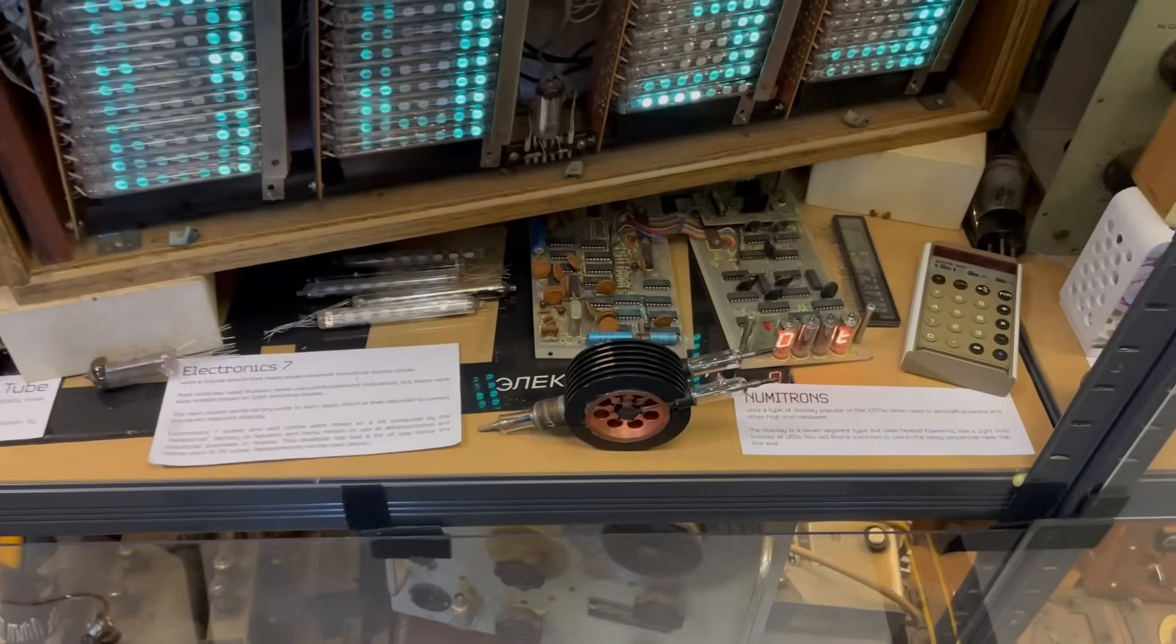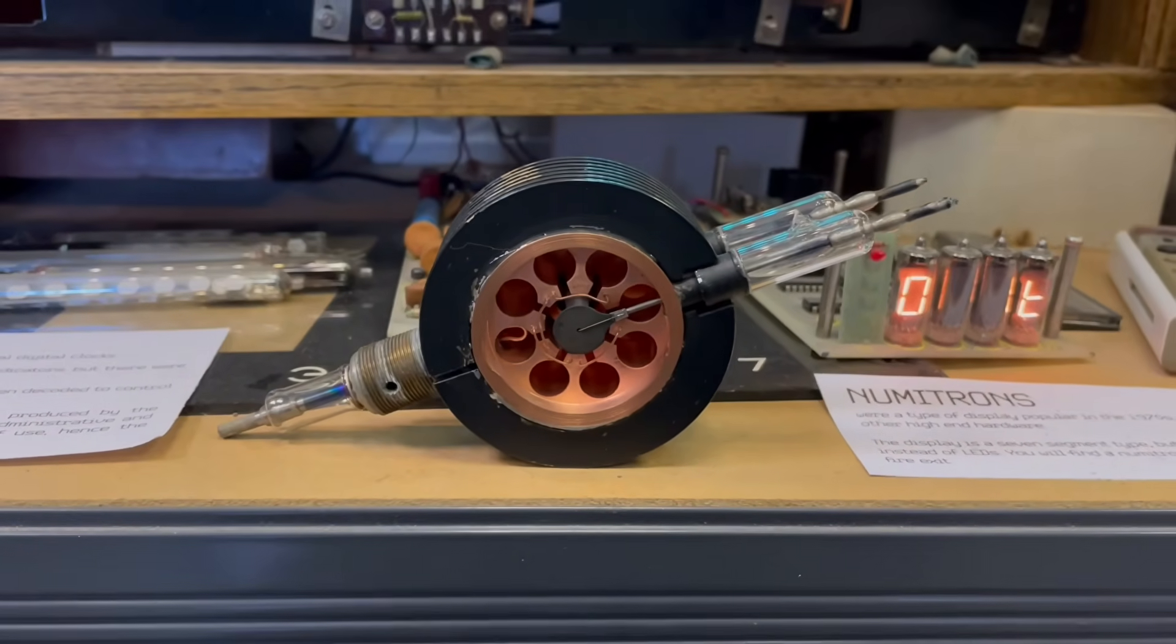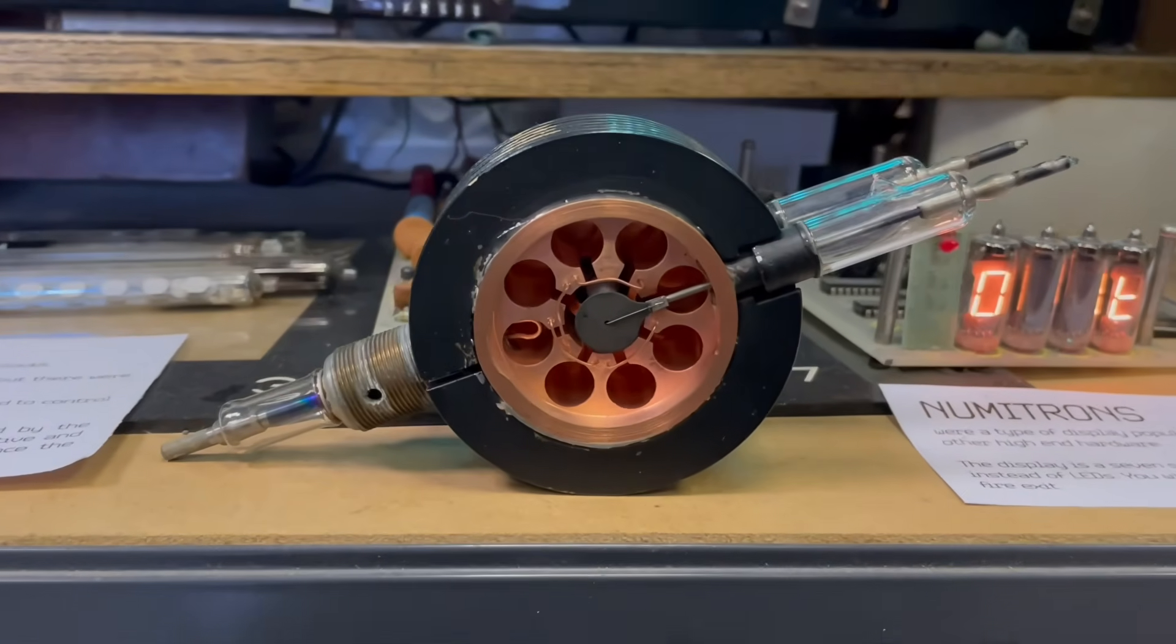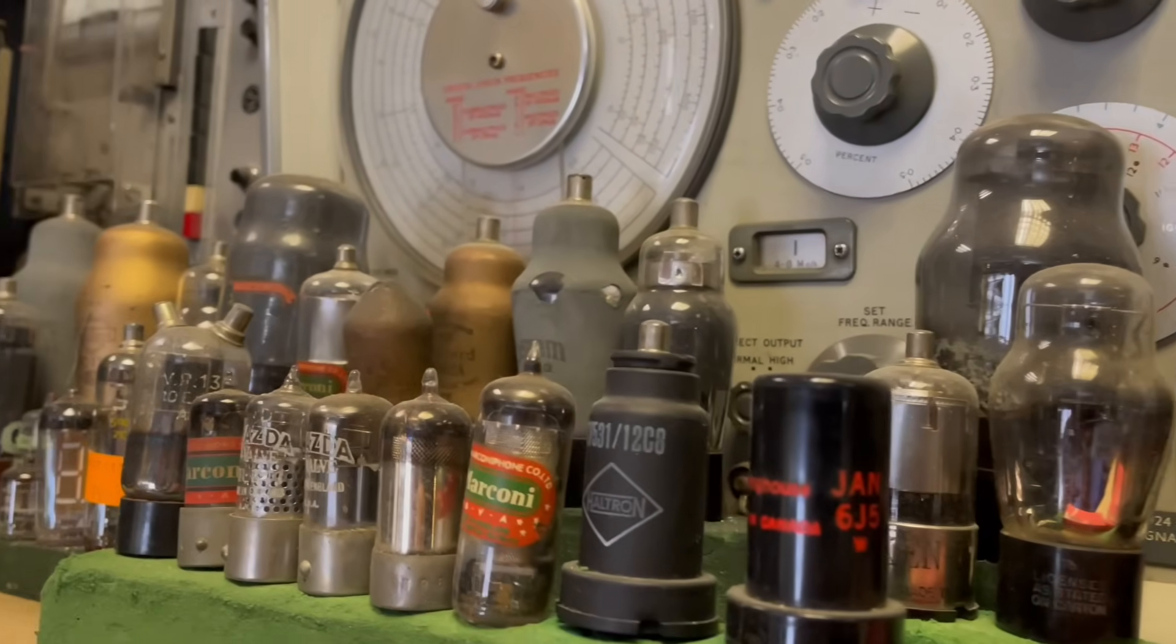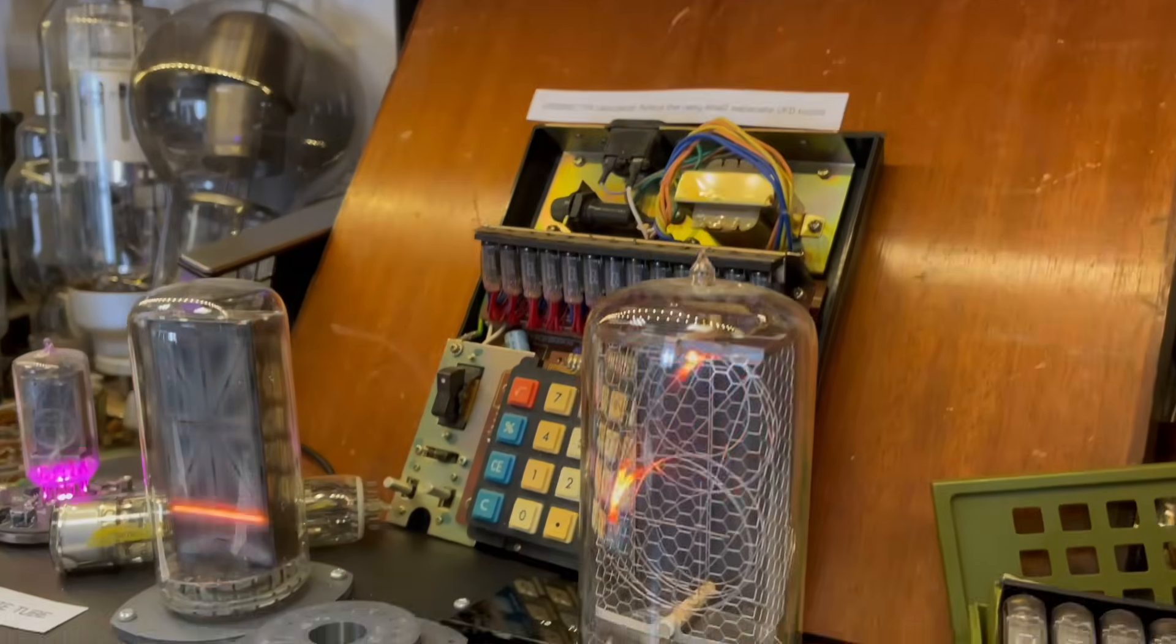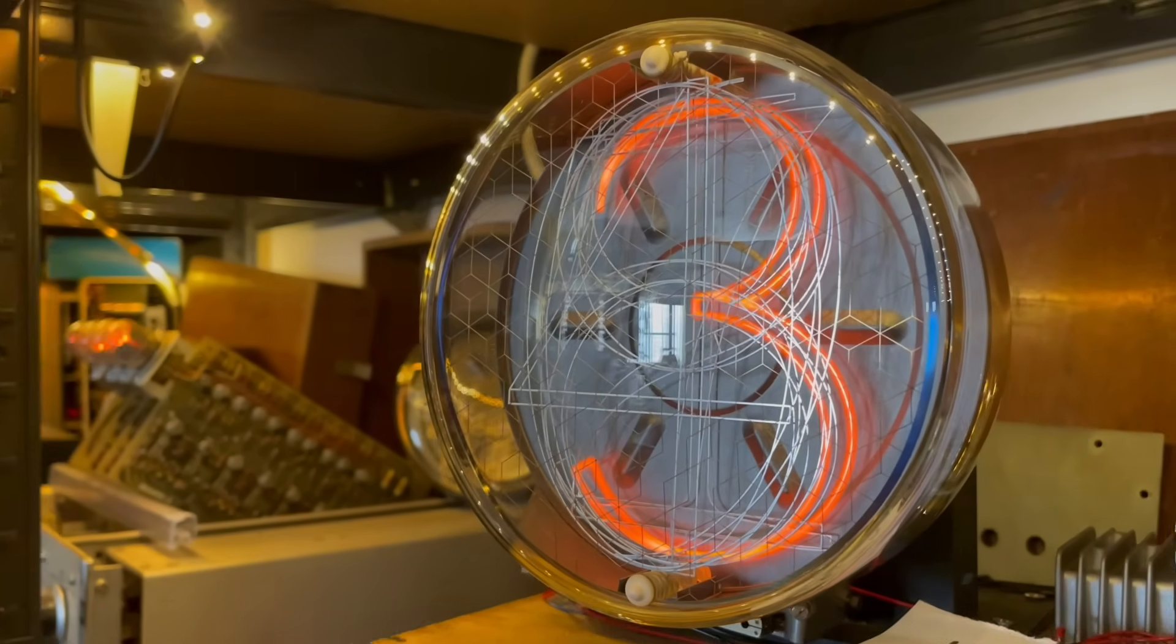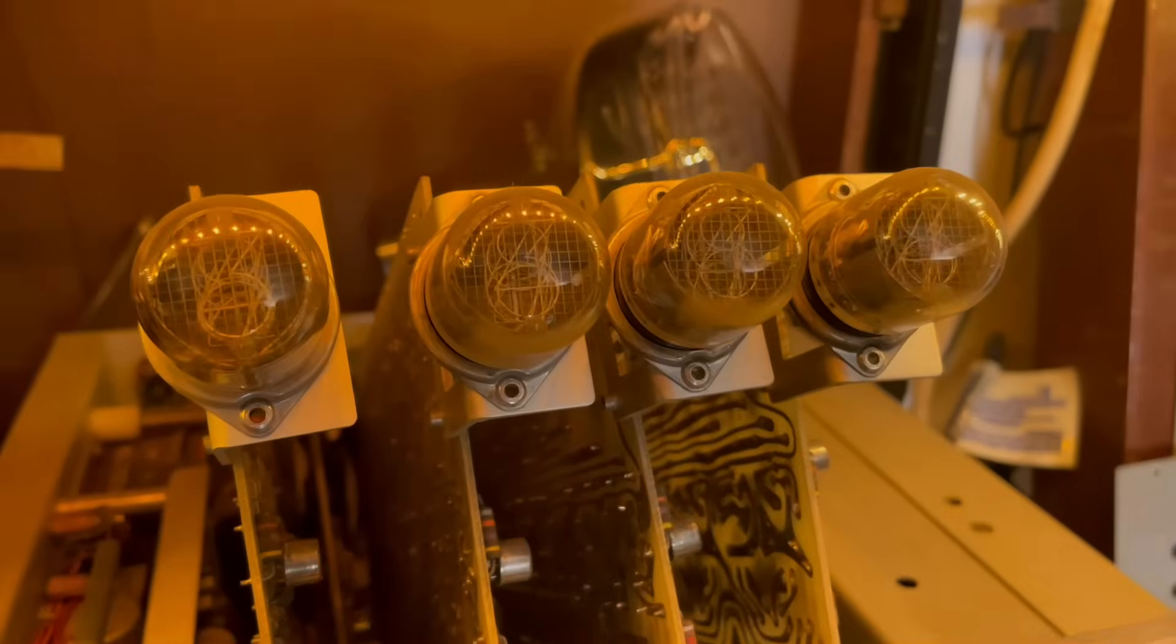It really demonstrates the construction of them. You can see there all of the layers of different cathodes in there that make up all the patterns that are the numbers. We already talked a little bit about how valves work—some people call them tubes—when we talked about this cavity magnetron.